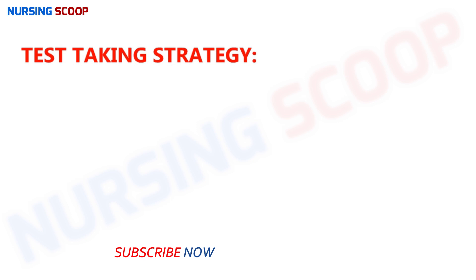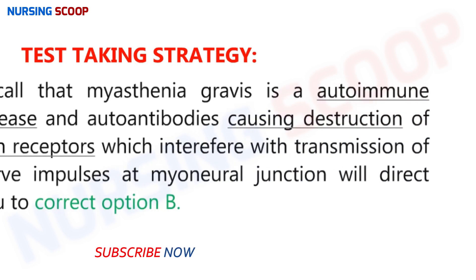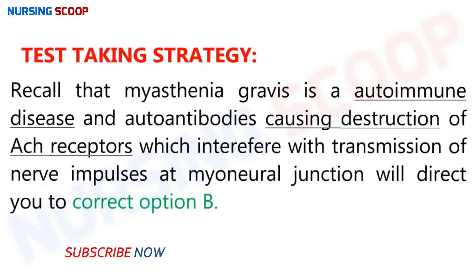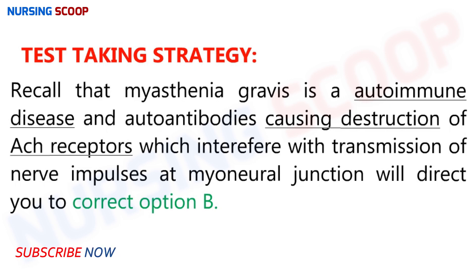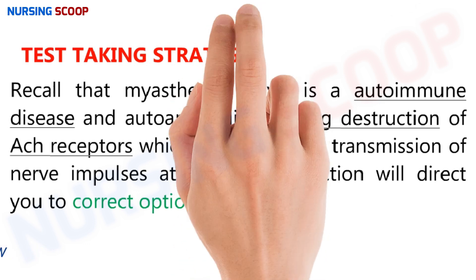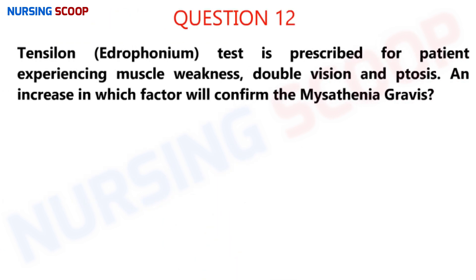Test-taking strategy for this question: just recall that myasthenia gravis is an autoimmune disease, and these autoantibodies cause destruction of acetylcholine receptors which interfere with the transmission of normal nerve impulses at the myoneural junction. This will direct you to the correct option B.